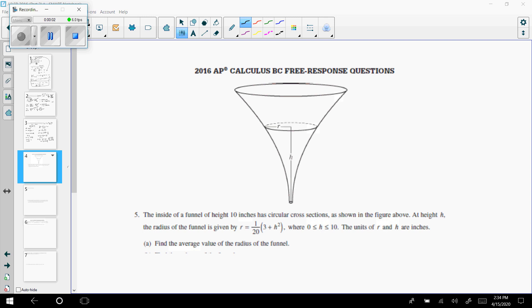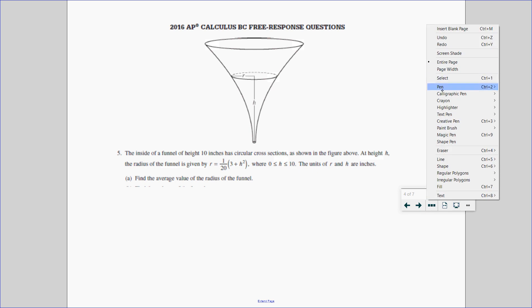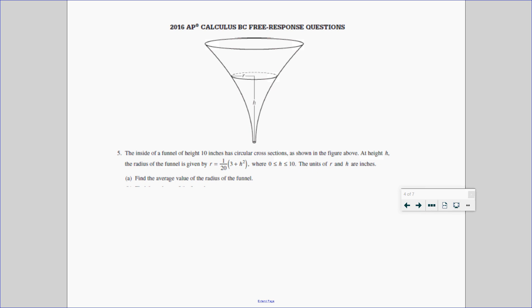All right, here we are for question number five from the 2016 AP exam. This was an area volume question that caused people to panic because it talked about what's called a funnel. And everybody in my class said, Mr. Warren, you never taught us how to find the volume of a funnel. You don't really have to know the volume of a funnel to answer this question. I promise you it is pretty easy to do. So let's take a look here.